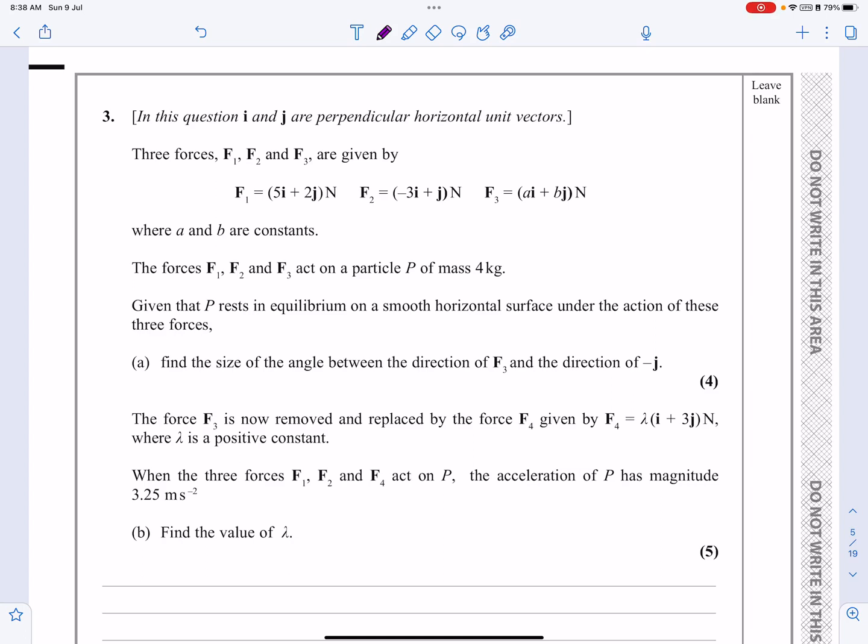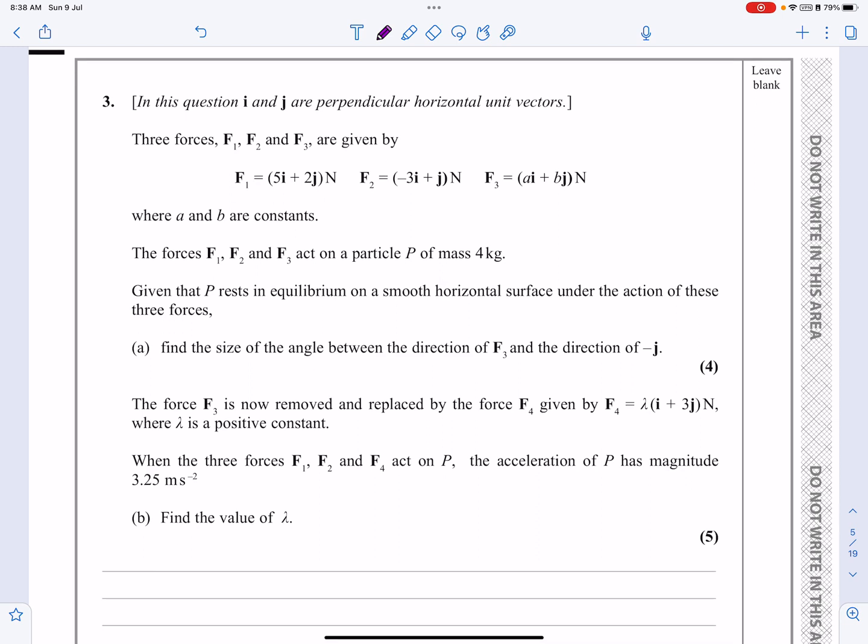Okay, this is the M1 paper from June 2021. This is question number three, which if we have a quick look at it, is a forces question, but we can see it's forces and vectors. There's some work on equilibrium. They're giving me a mass at some stage, so I'll probably have F equals MA. And for the last part, probably some sort of equation I've got to solve to be able to work out what lambda is. But let's actually make a start on it and see what we're doing.